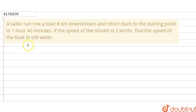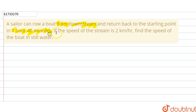Hello everyone! The question is: a sailor can row a boat 8 km downstream and return back to the starting point in 1 hour 40 minutes. If the speed of the stream is 2 km per hour, find the speed of the boat in still water.